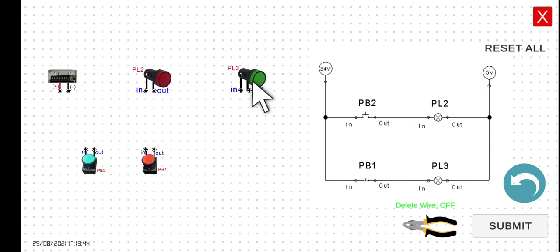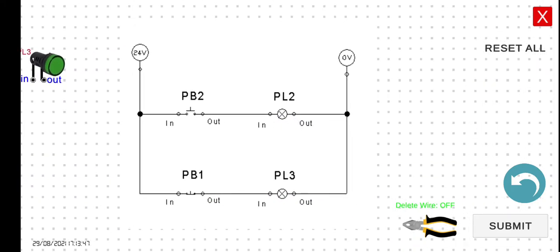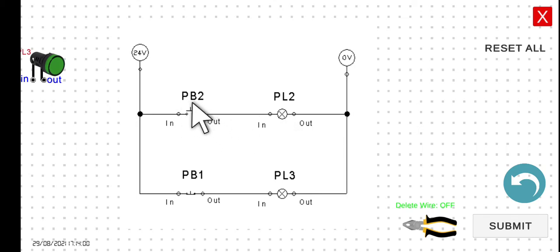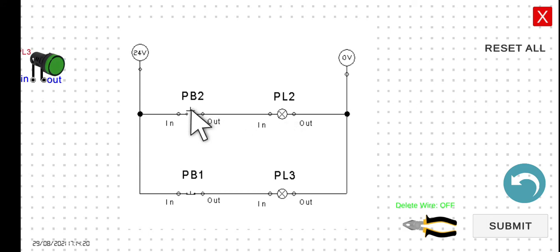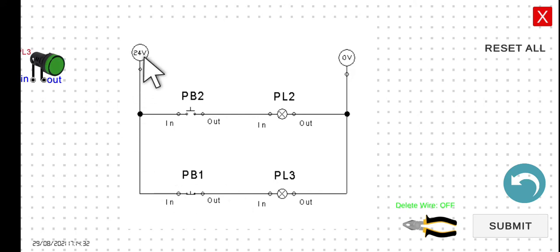Let's discuss the schematic diagram. The moment we turn on our power supply, let's analyze what will happen to PL2. Since PB2 is a normally open push button, current will not be able to flow to the load, hence PL2 will be turned off. However, if we press PB2 it will create a closed connection and PL2 will turn on. If we release PB2, it returns to its original state — turned off.